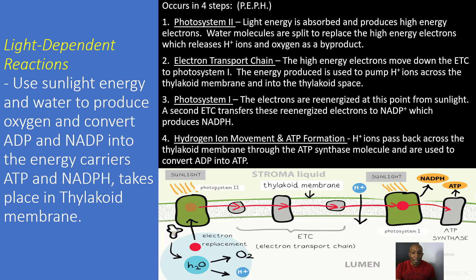Here's Photosystem II — step one. The sunlight energy comes in and is absorbed, producing high-energy electrons. Then the water molecule is actually split into hydrogen ions, and we have the oxygen gas which is given off as a by-product — that's what we breathe in.